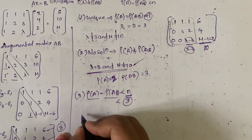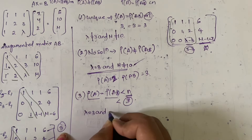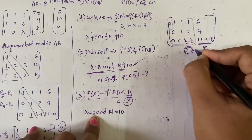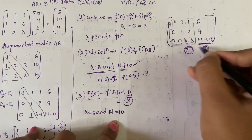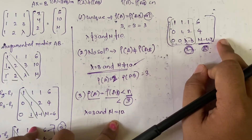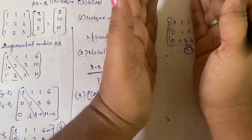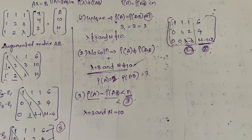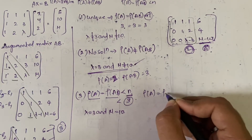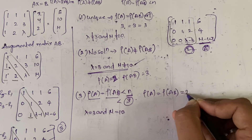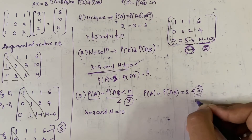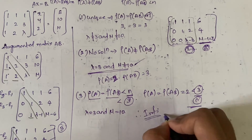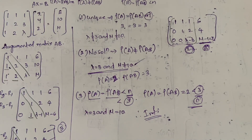The condition is λ = 3 and μ = 10. With these values, the third row becomes [0 0 0 | 0], so rank(A) = rank([A|b]) = 2, which is less than 3 (the number of unknown values). Therefore the system has infinite number of solutions.